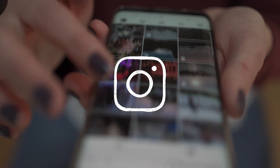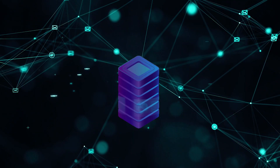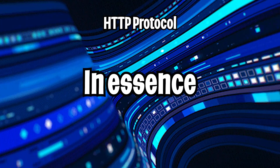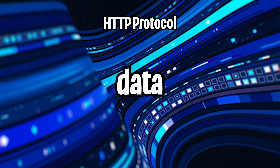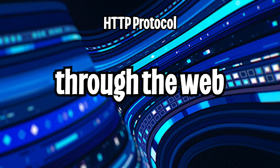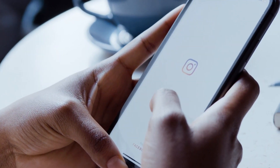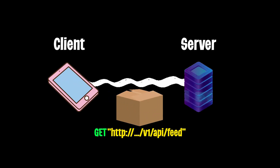So when you use an app like Instagram, there will be a server that exposes a bunch of services that can be accessed through the HTTP protocol. HTTP is basically how data is transmitted through the web. So when you open the Instagram app on your phone, there is code that will make an HTTP request to power your feed.